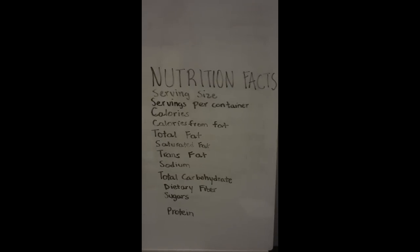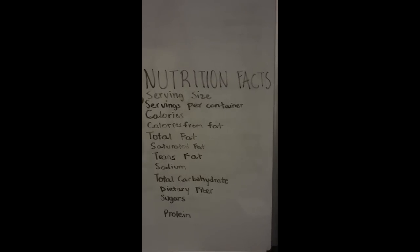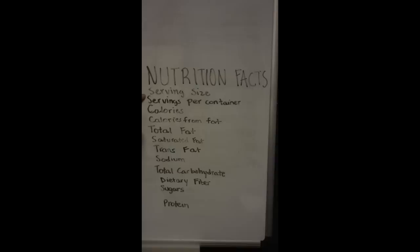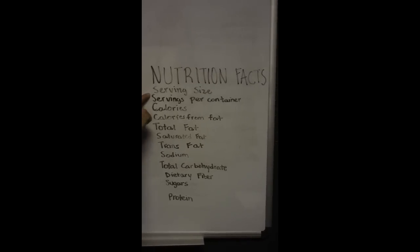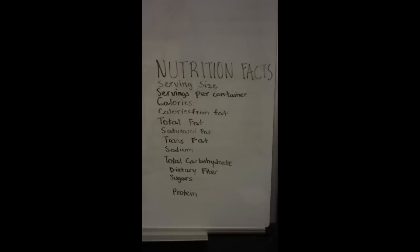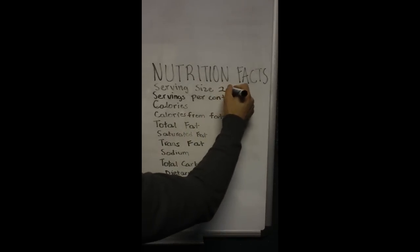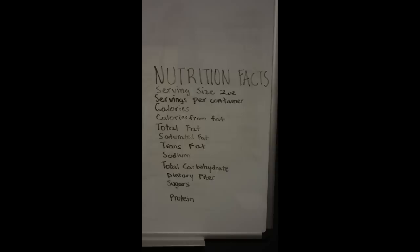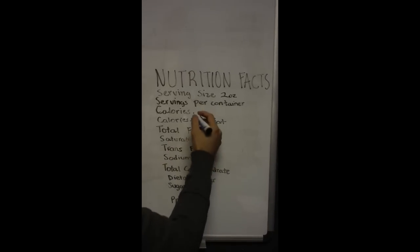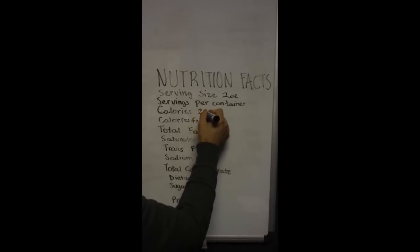So at the very top what you're going to see is going to be the serving size. Now this is very important because a lot of times it will say a very small serving size here, let's say like for example 2 ounces, right? And so in 2 ounces there's only 20 calories.